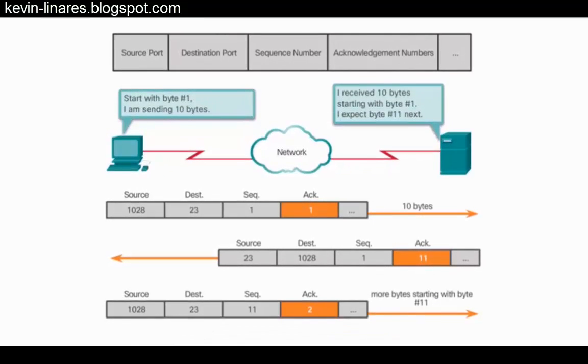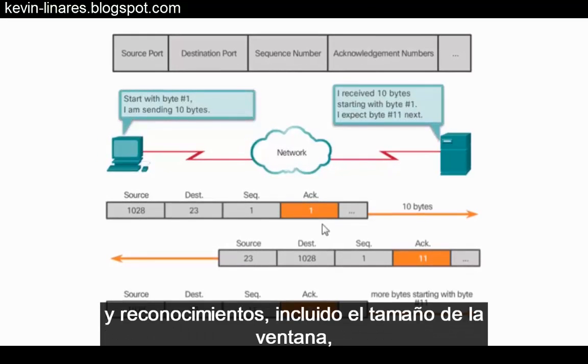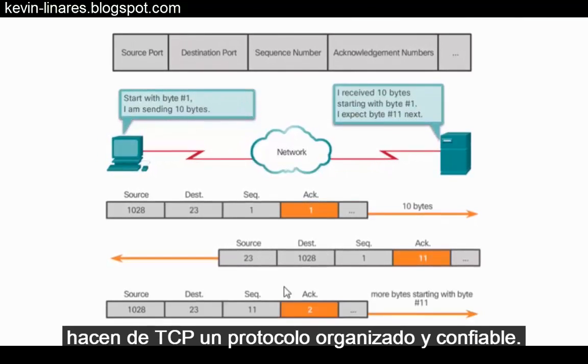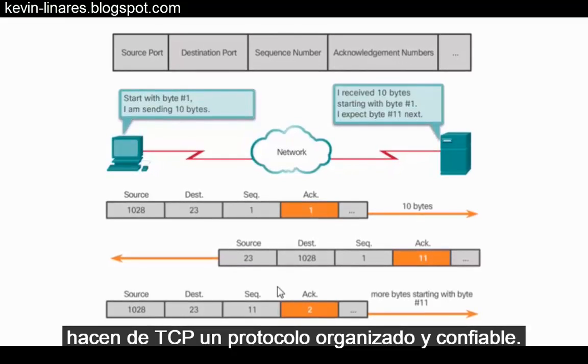You can see how sequence numbers and acknowledgements, including the window size, make TCP a very orderly and reliable protocol.